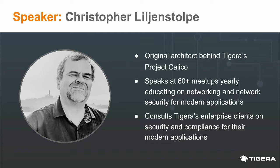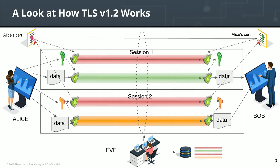The final interesting change to TLS 1.3 is something called perfect forward secrecy. TLS 1.2 could do this sort of optionally, but in TLS 1.3 it's built into the protocol from day one. The easiest way to discuss what perfect forward secrecy is, is to show a couple of images. So in this case, I have Alice who's trying to communicate to Bob — say Bob has a web server and Alice is a web client.